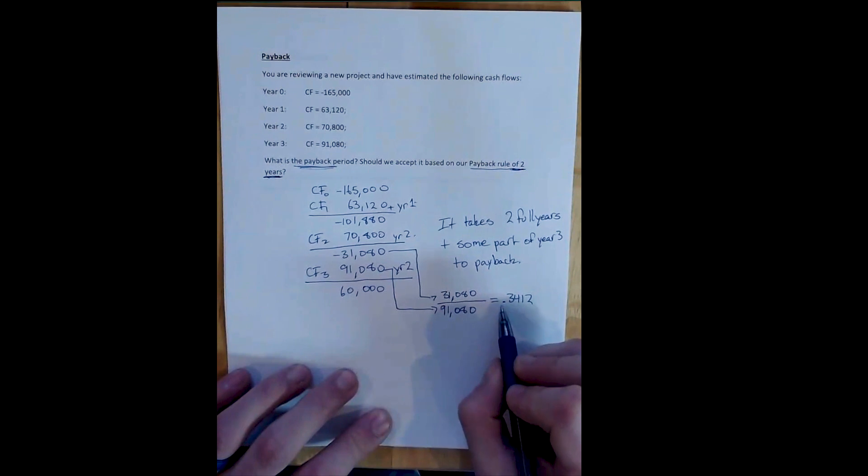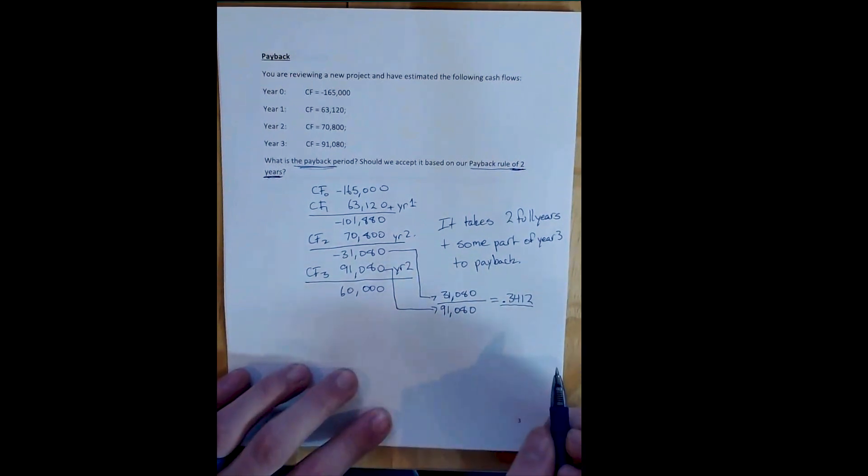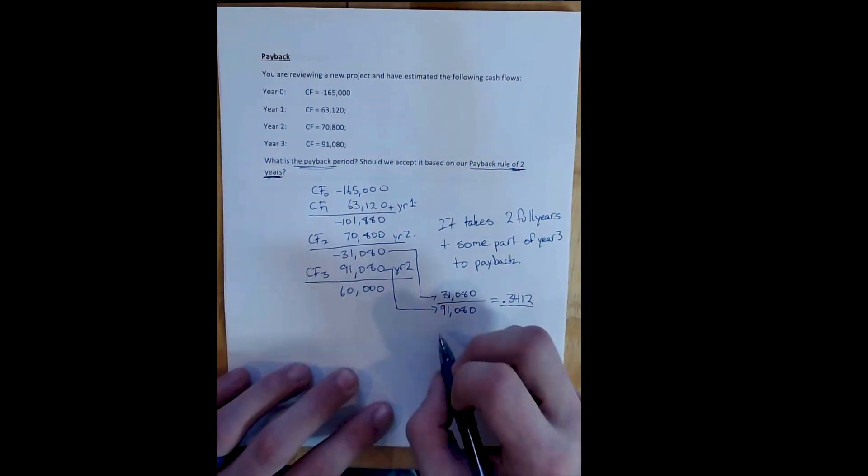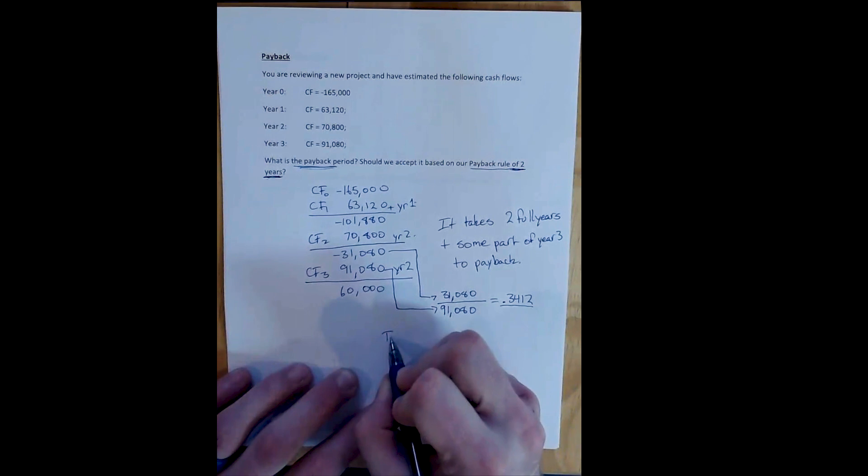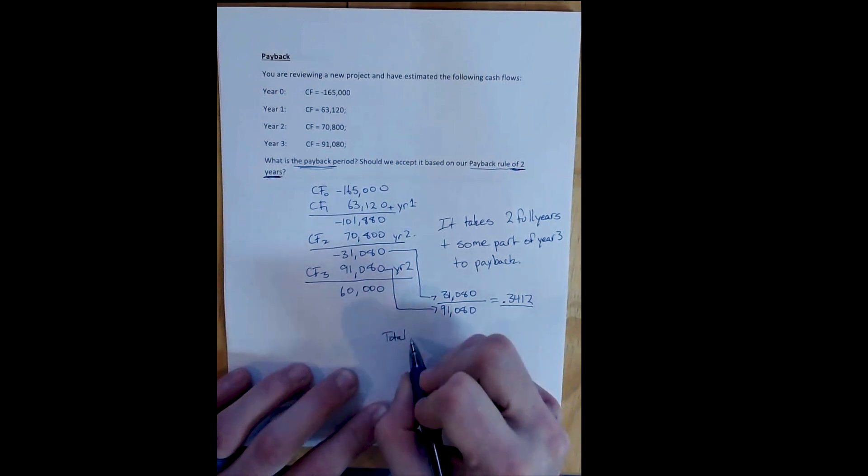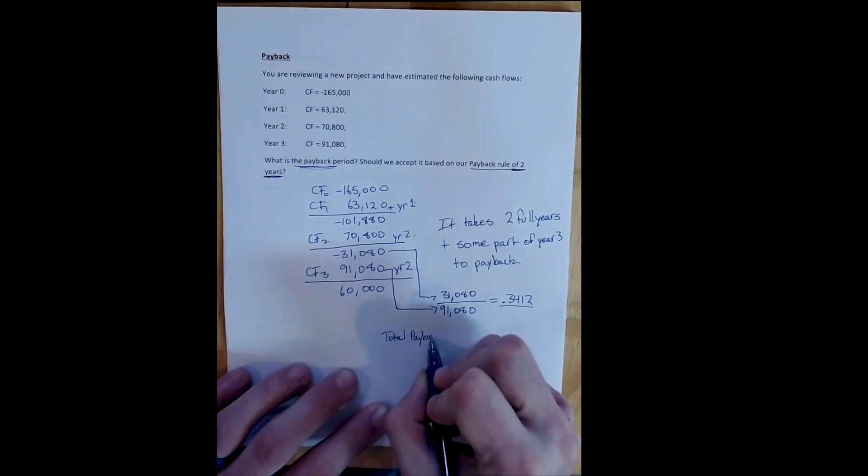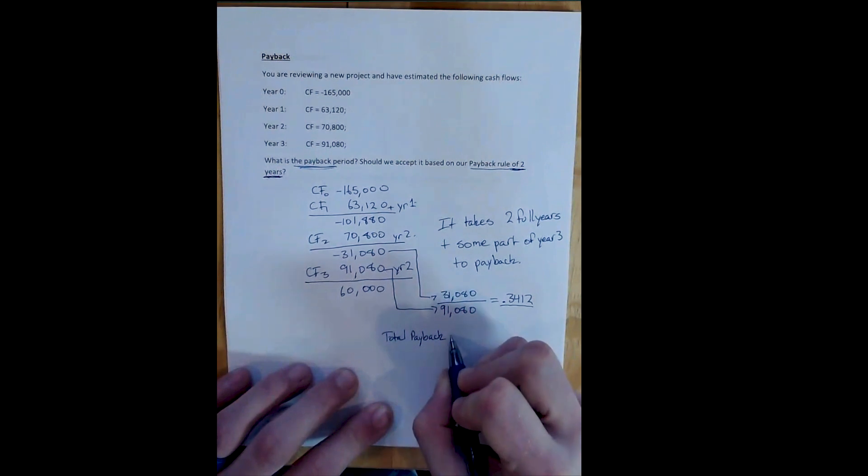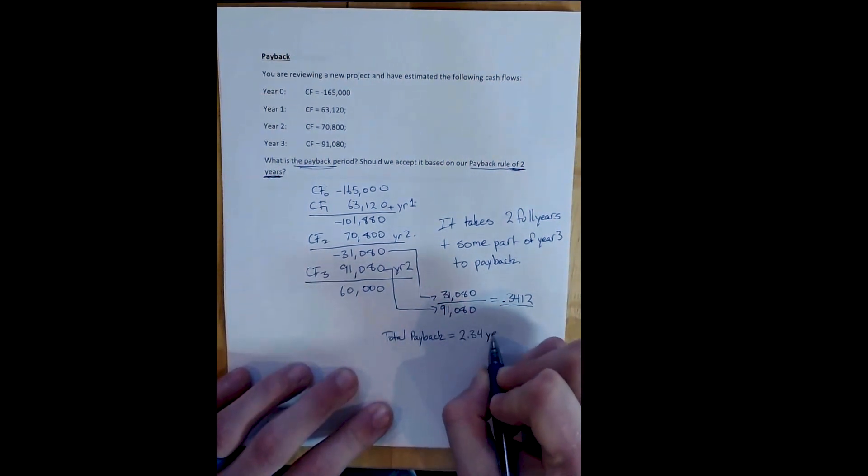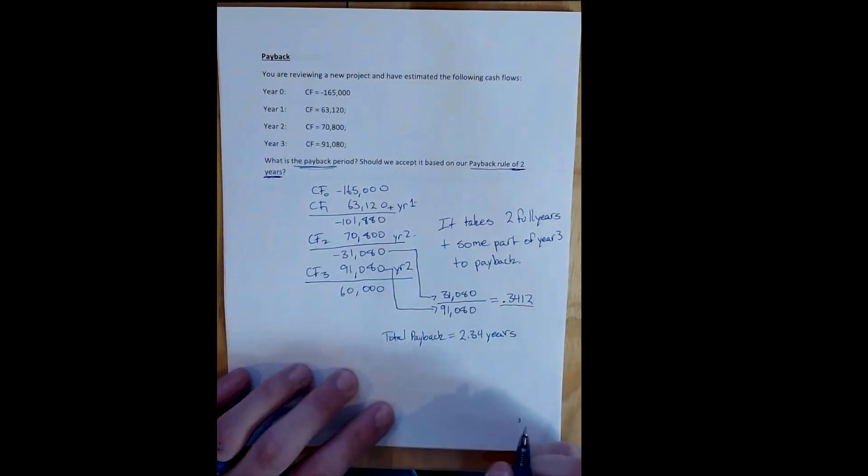What that says is about 34% of the third year goes by, which in this case is about four months. So it takes two full years and four months, or 2.34 years, to pay back the project.